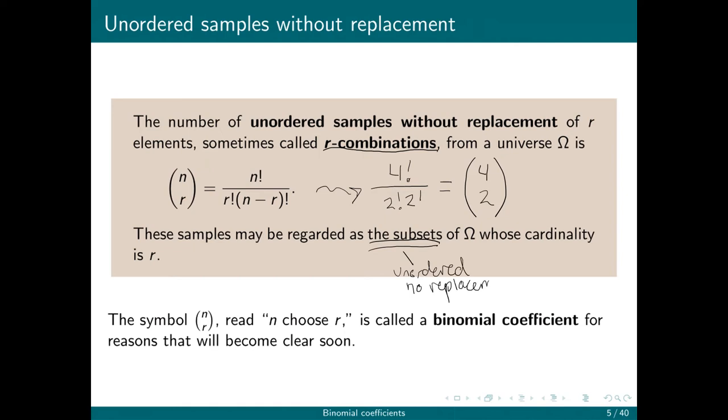You can't repeat elements in a set, so those are exactly subsets of omega whose cardinality is r. We call this symbol a binomial coefficient and the way that we read it is n choose r. I want to say something right here: this is not a fraction. This is a fraction, but this is not a fraction. We do not draw a line between the 4 and the 2. We just keep them on top of each other in the parentheses.